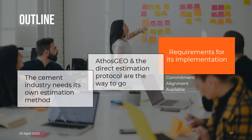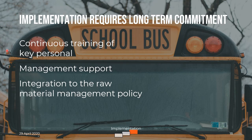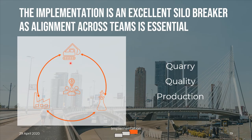We're convinced that AtosGeoBlend and the Direct Estimation Protocol are the way to go for the cement industry to estimate its resources and reserves. To put it in place, you need the commitment of your management and alignment within your teams. You need to train your key personnel continuously. The implementation also requires the long-term commitment of management, as access to raw materials is a long-term game and is key for the sustainability of the business. Finally, you should integrate the protocol into your company's raw material management policy. The rollout is an excellent opportunity for breaking silos within your organization — your quarry team, your quality team and your production team must all be aligned.